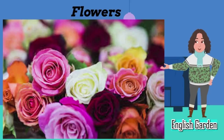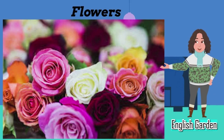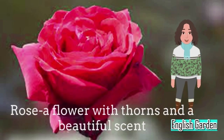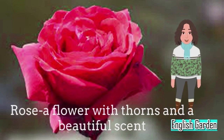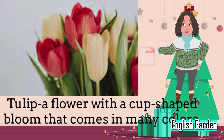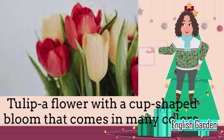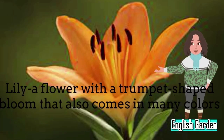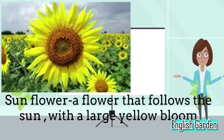Flowers are beautiful and there are many different types. Here are the names of some famous flowers in English. Rose: a flower with thorns and a beautiful scent. Tulip: a flower with a cup-shaped bloom that comes in many colors. Lily: a flower with a trumpet-shaped bloom that also comes in many colors. Sunflower: a flower that follows the sun with a large yellow bloom.